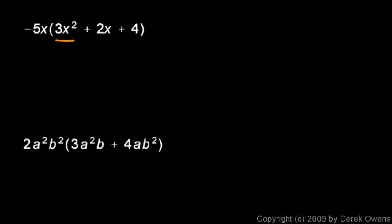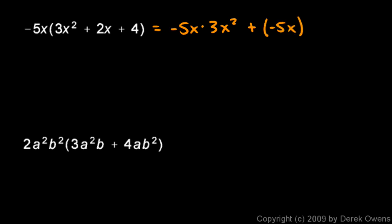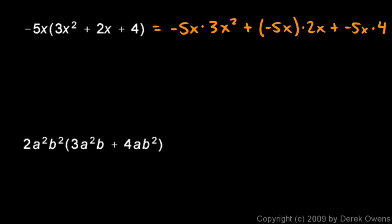Now we have negative 5x times (3x squared plus 2x plus 4). This monomial out front, negative 5x, has to be multiplied by each of the three terms: negative 5x times 3x squared, plus negative 5x times 2x, plus negative 5x times 4. Working those out: negative 5 times 3 gives negative 15, and x times x squared gives x cubed, so the first term is negative 15x cubed. Then negative 5 times 2 gives negative 10, and x times x gives x squared, so the second term is negative 10x squared.